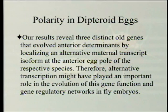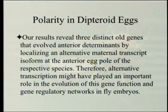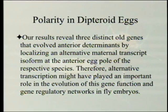The results reveal three distinct old genes that evolved anterior determinants by localizing an alternative maternal transcript isoform at the anterior egg pole of the respective species. Therefore, alternative transcription might have played an important role in the evolution of this gene function and gene regulatory networks in fly embryos.